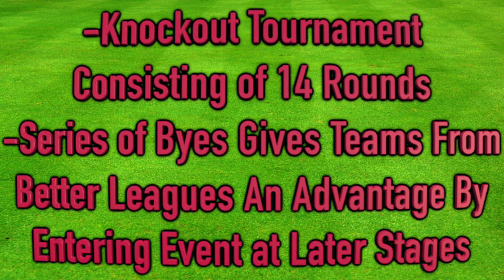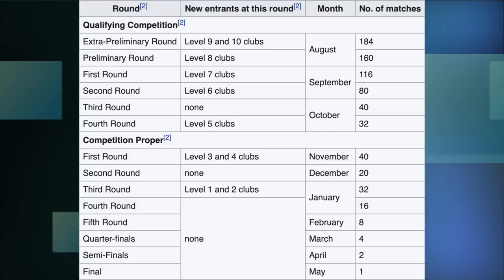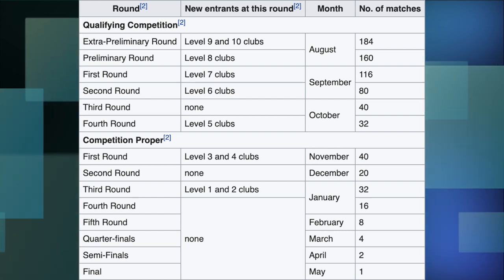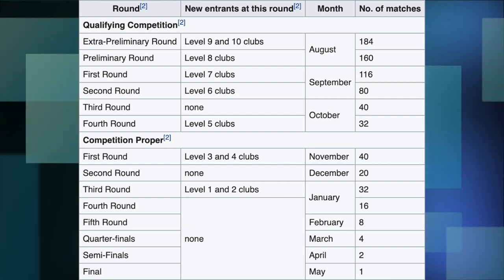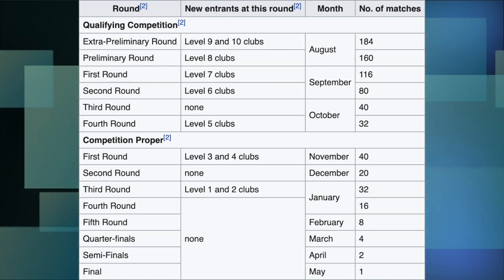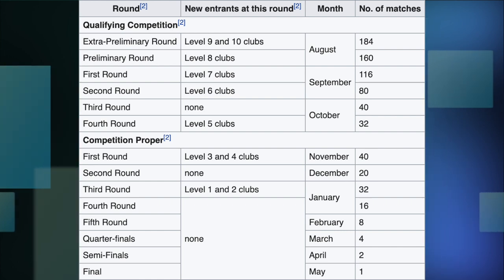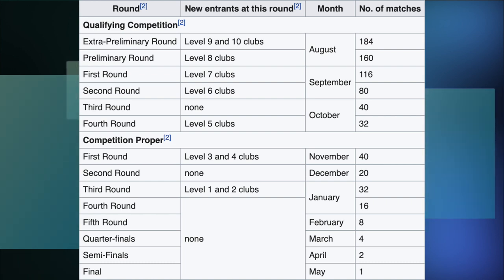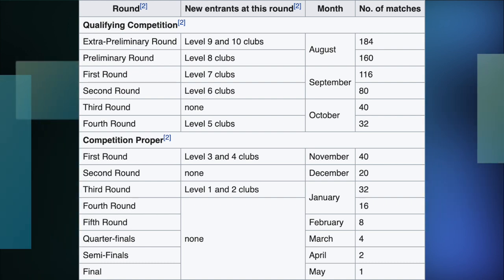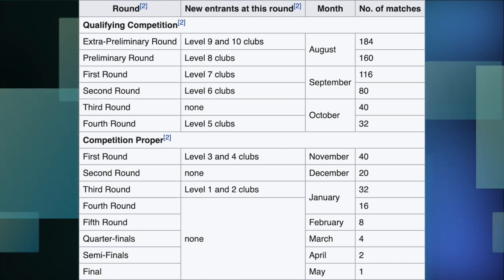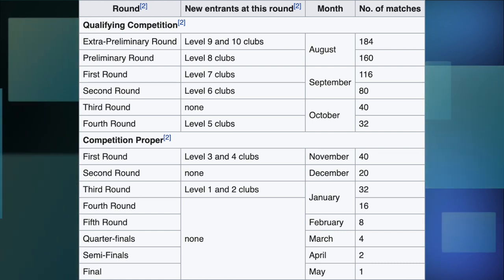The first round — technically the extra preliminary round — is just clubs from leagues in levels 9 and 10. All those teams are randomly drawn and paired against another team; whichever club wins their head-to-head matchup will advance to the preliminary round. Then we have another random draw, except this time we throw in the level 8 teams. All the winners from the extra preliminary round plus the level 8 clubs are all thrown into a giant pot and paired up randomly. Winners advance to the next round, and we keep repeating this same process — adding in teams from better leagues — through the first round, second round, third round, fourth round, then we get to the competition proper in November.